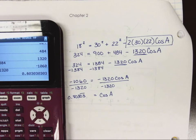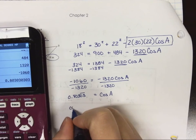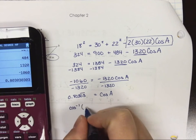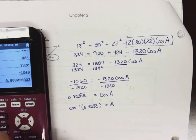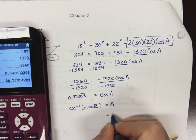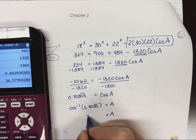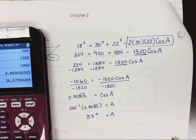I've got a repeating decimal there, 0.80303. How do I solve for angle A? Second function. Second function cos. I'm pulling it from my other line, and A is equal to, let's round to the nearest whole degree, 37 degrees.